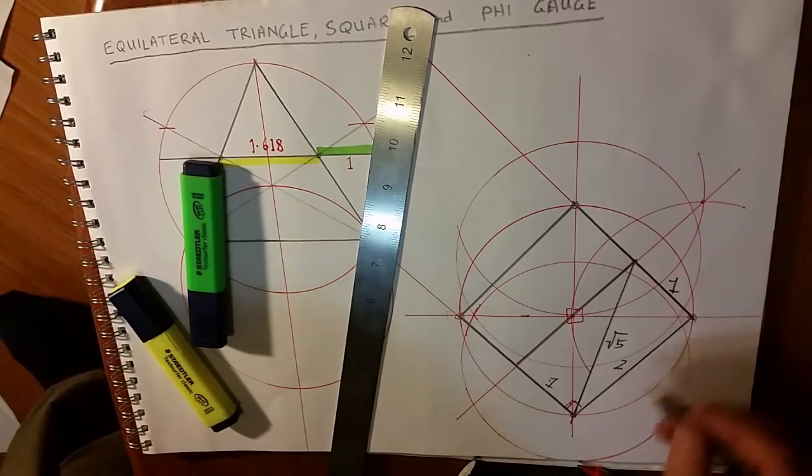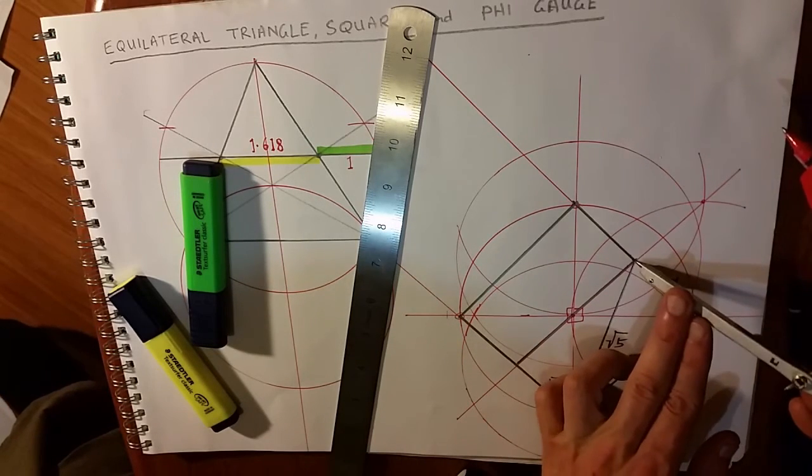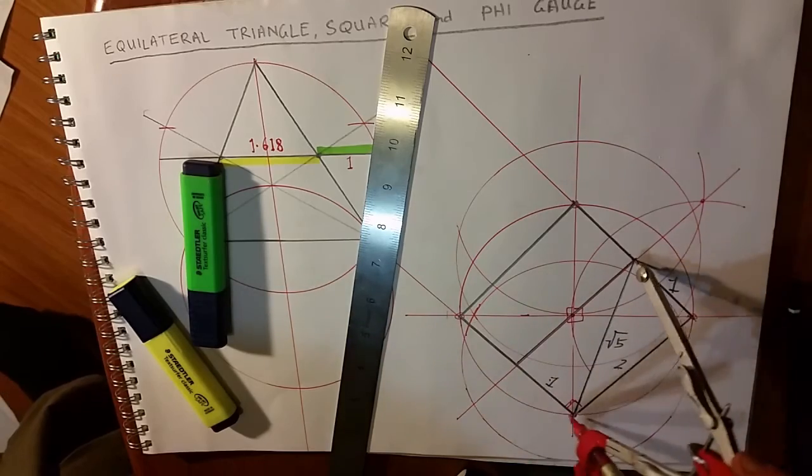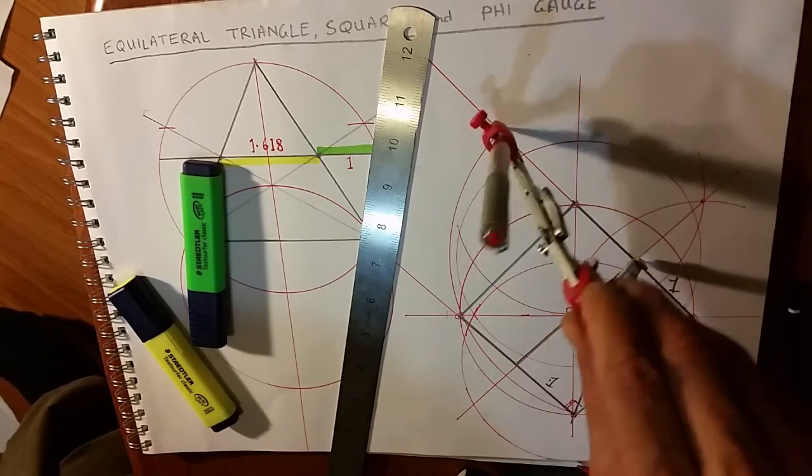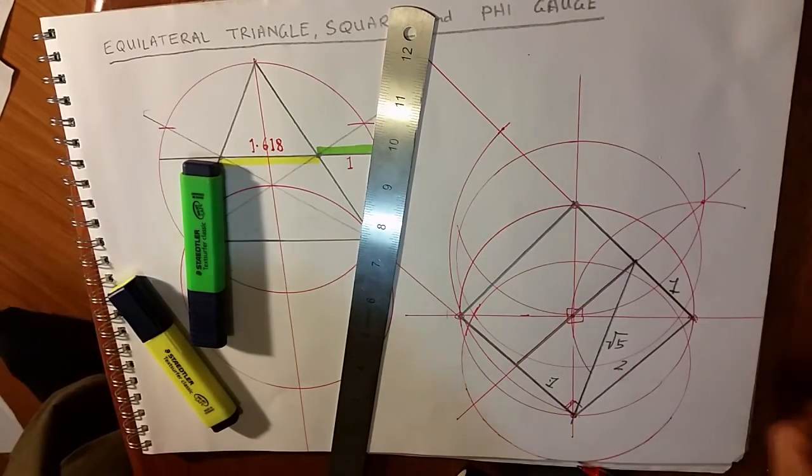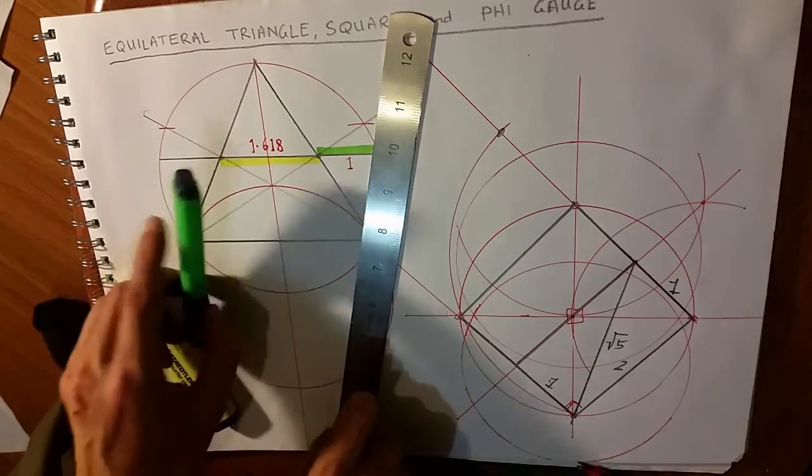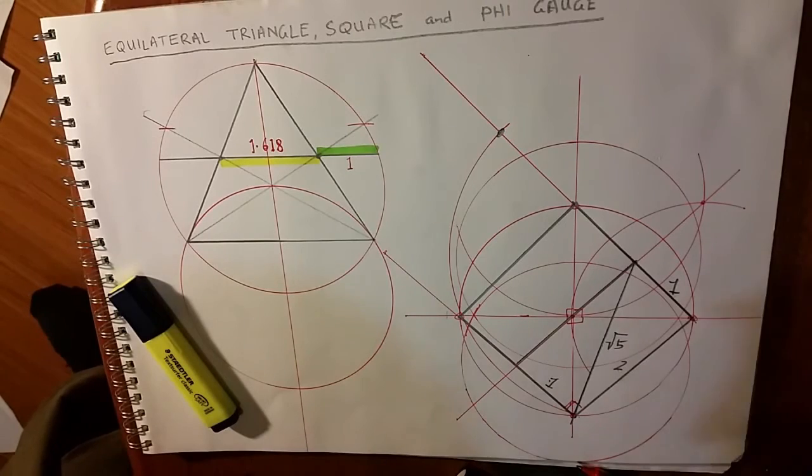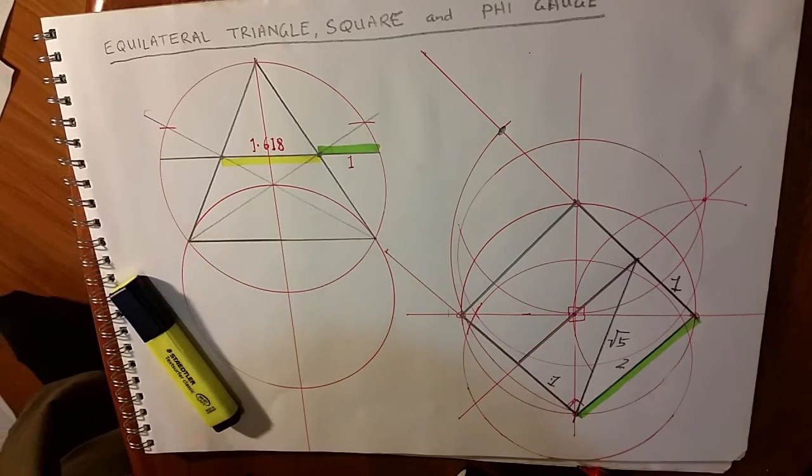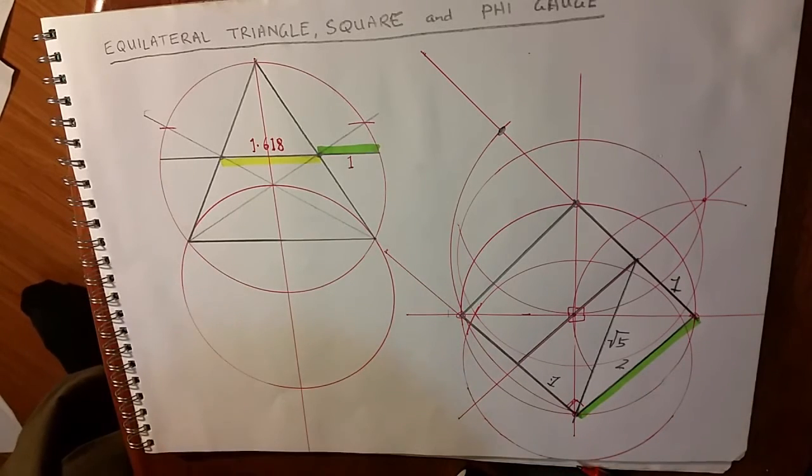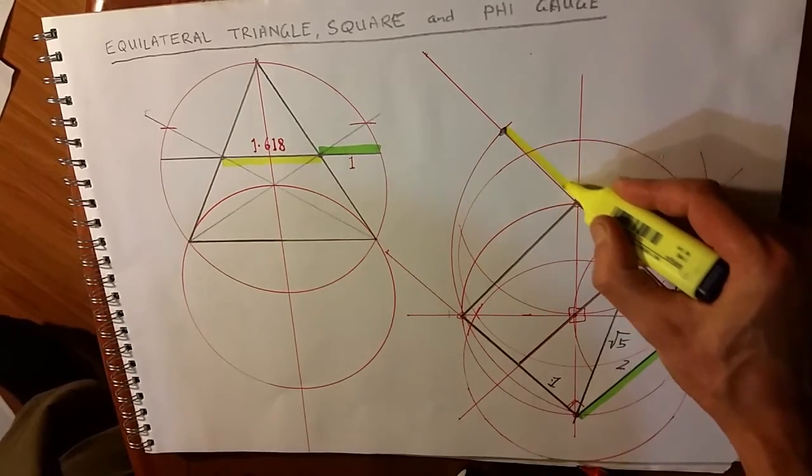We already have one and two. If I extend this up, now what we have is two. And this yellow line being one...